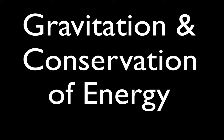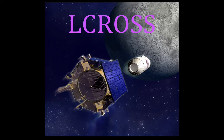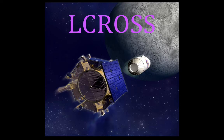In today's video we're going to go over a problem involving gravitation and conservation of energy, using a real world example: the LCROSS satellite. LCROSS stands for Lunar Crater Observation Sensing Satellite, launched in June 2009 to determine whether there was hydrogen — and therefore possibly water — in the polar regions of the moon. The spent Centaur booster rocket was allowed to fall and collide with the moon, sending up a plume of debris.